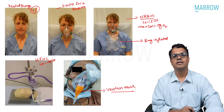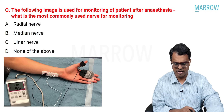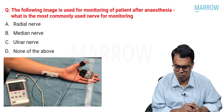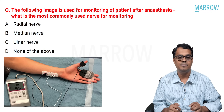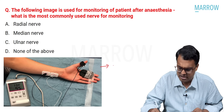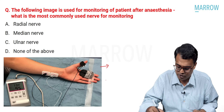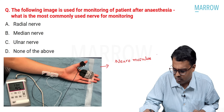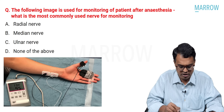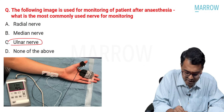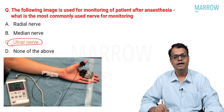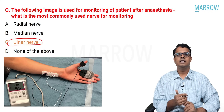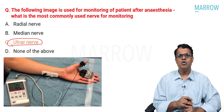The next question that has been asked: the following image is used for monitoring of a patient after anesthesia — what is the most commonly used nerve? This image, which I have also shown in our video lectures, is of neuromuscular monitoring. The most commonly used nerve to monitor is the ulnar nerve, which monitors the adductor pollicis muscle.